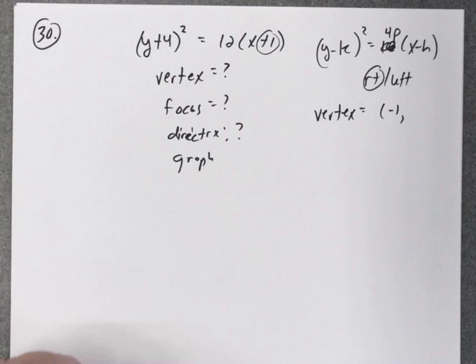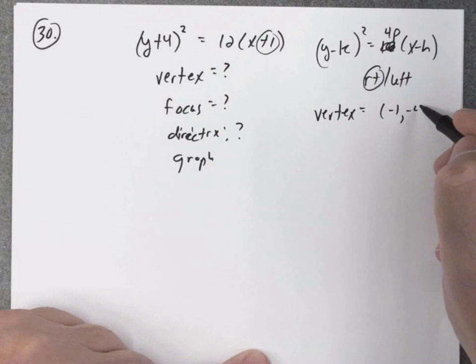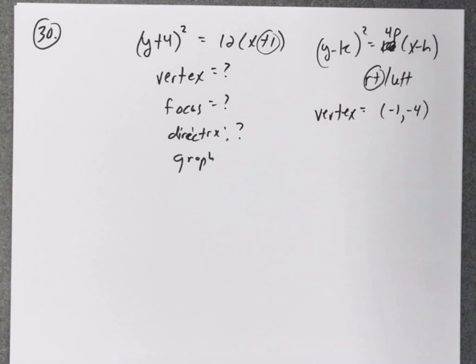So +1 becomes -1. For k, I'm looking at +4, but it's actually going to end up being -4. So there's your vertex.